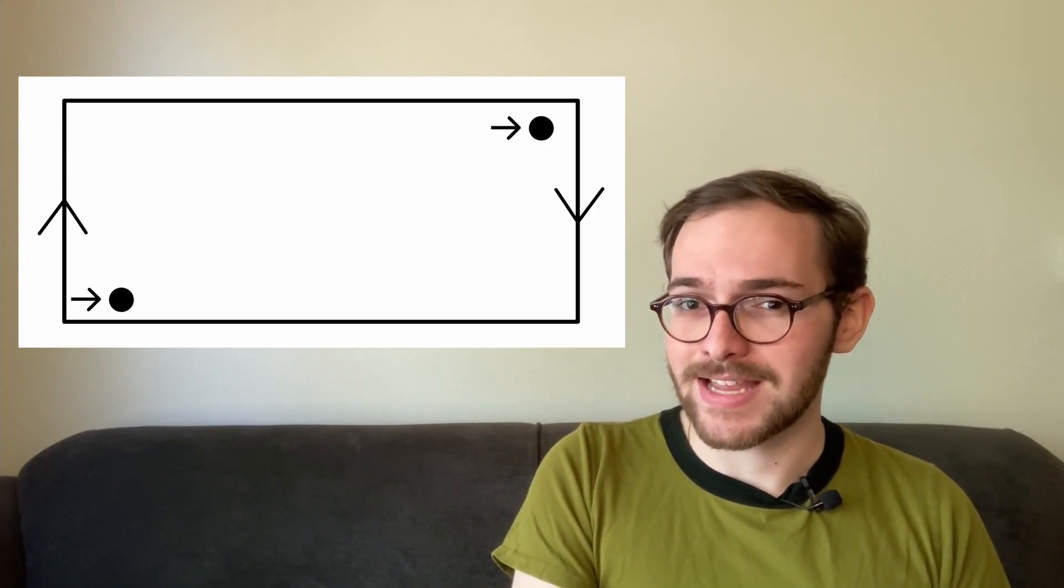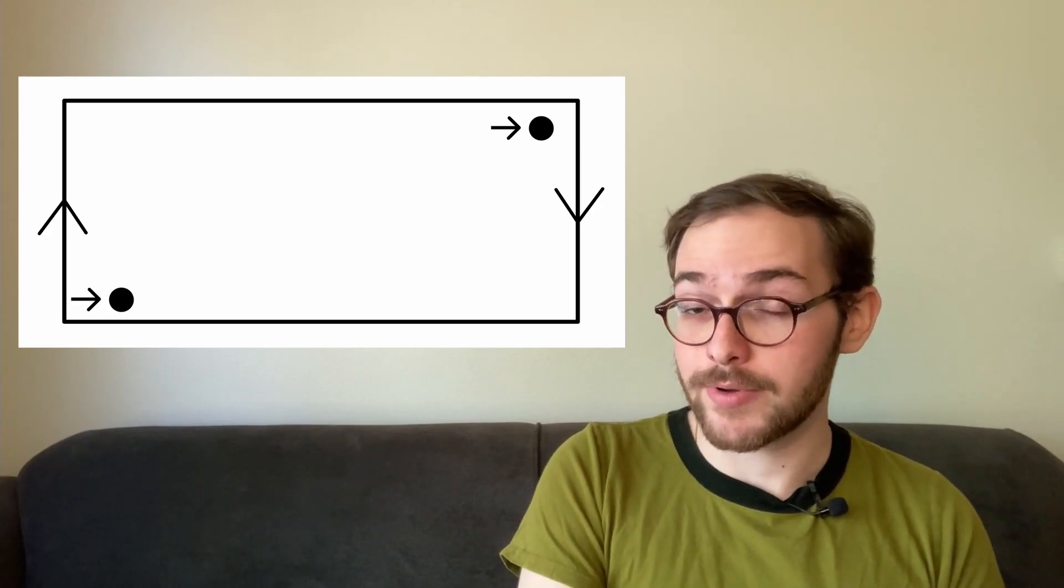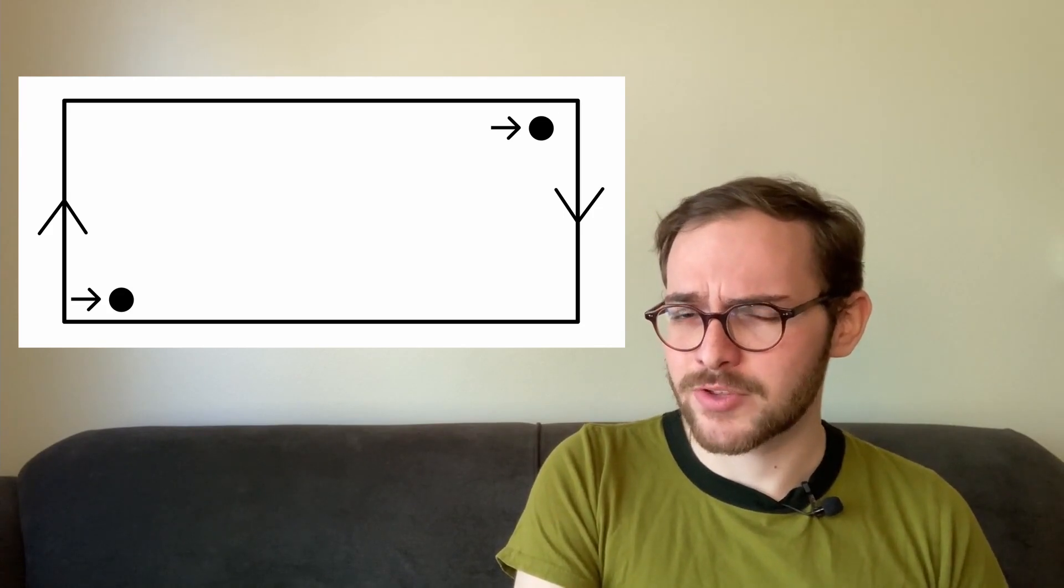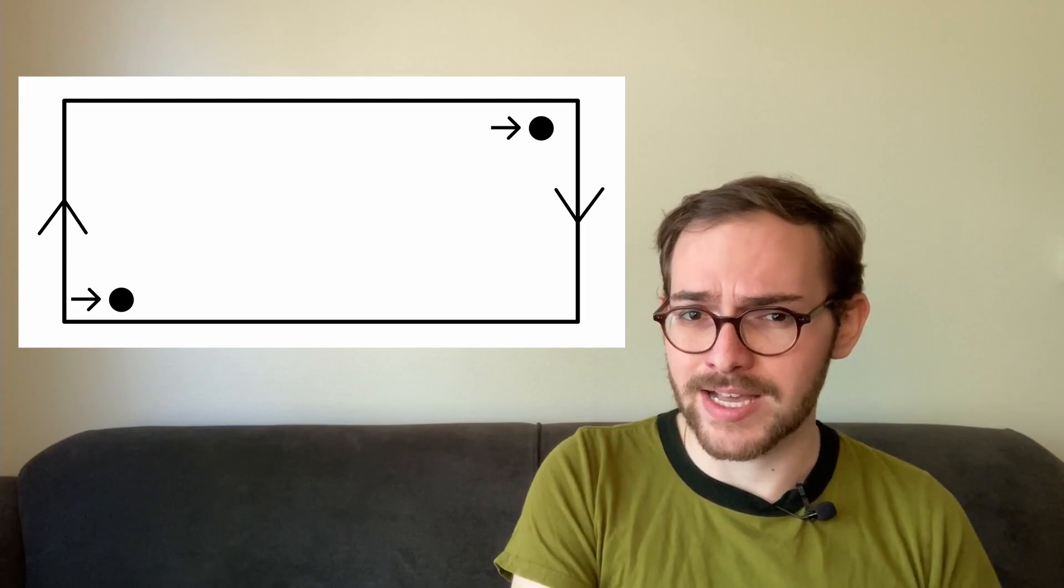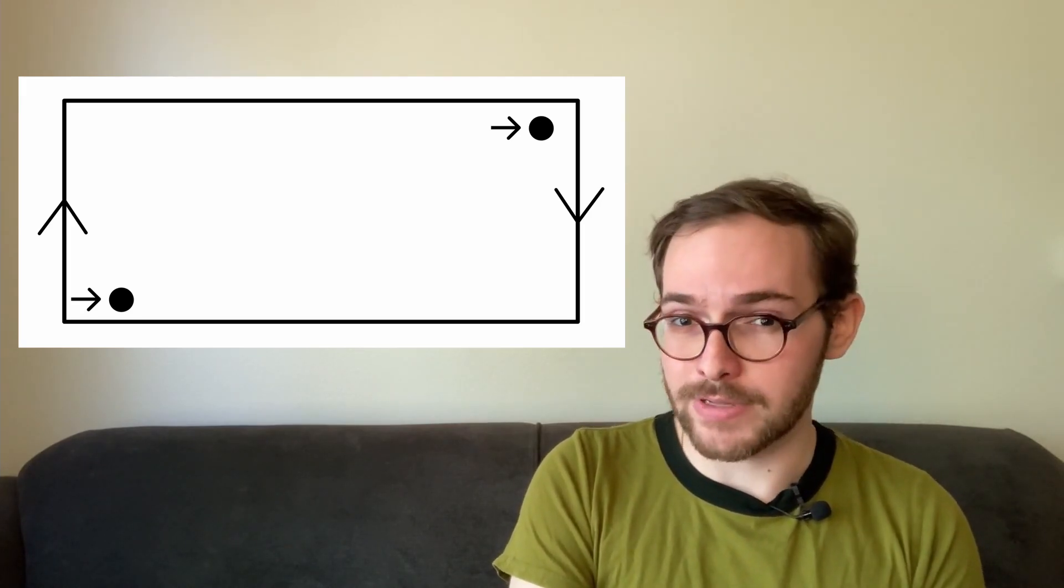Another way to think about this diagram is that there are teleporters on either side of the strip, but oriented backwards. If a point passes through close to the top of one of the teleporters, it comes out on the other side, but close to the bottom.